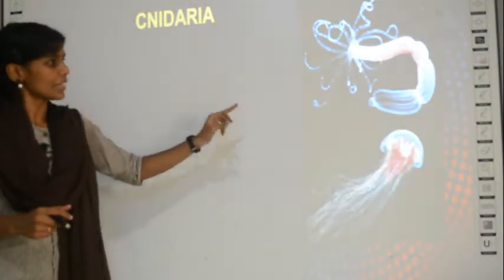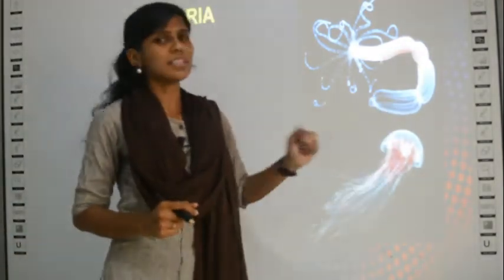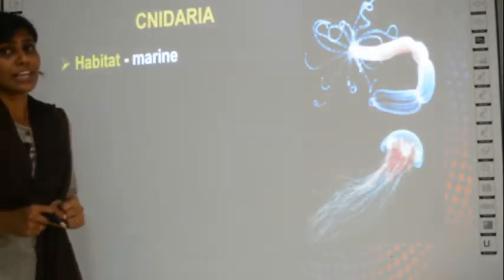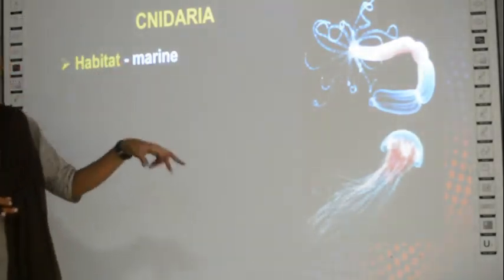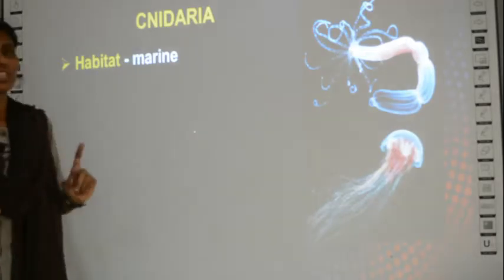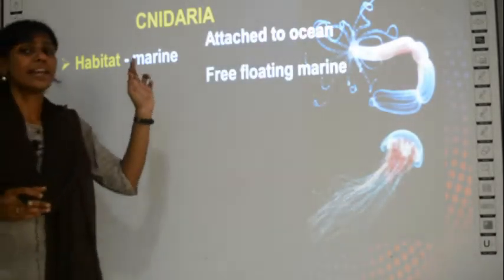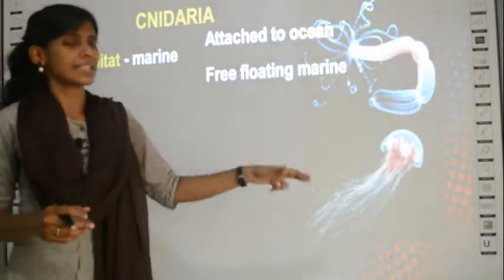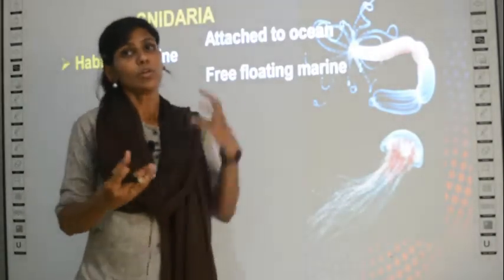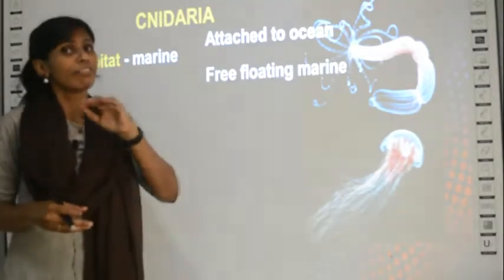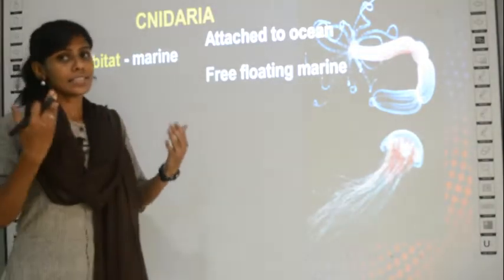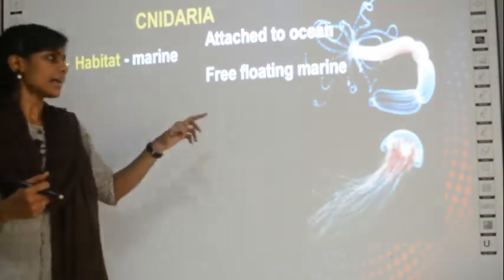The next group is Cnidaria. Two examples are Hydra and Jellyfish, both coming under the group called Cnidaria. Their habitat is also marine - they live only in salt water, not fresh water. They can exist in two forms: either attached to the ocean floor or free-floating, meaning they float about in the water without being attached to any place.